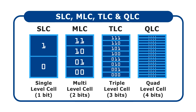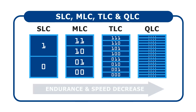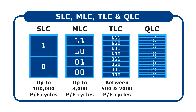The more states a memory cell has to distinguish, the less tolerant it becomes of electron leakage or retention, and the more work the drive has to perform when storing data. As the number of bits stored per cell increases, the fewer PE cycles an SSD can endure before failure, and the slower its sustained write speed. PE cycle counts are up to about 100,000 for SLC, up to about 3,000 for consumer MLC, between about 500 and 2,000 for TLC, and between about 300 and 1,000 for current QLC SSDs.